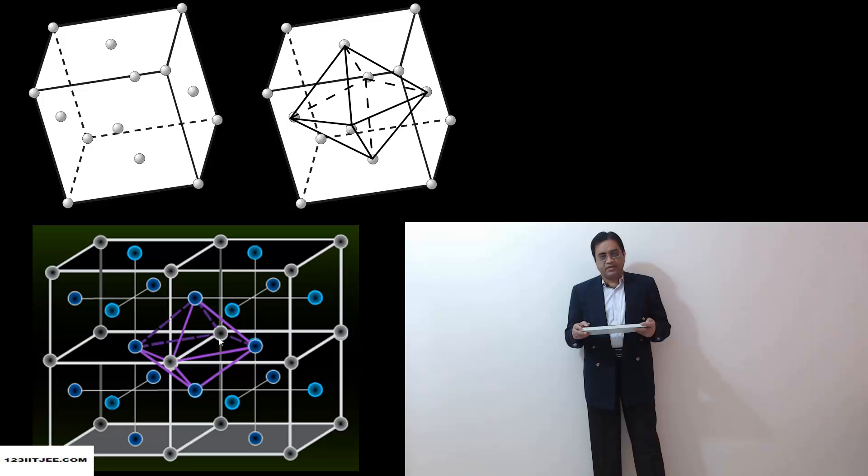All these give us an octahedron whose centroid is here on the edge of a unit cell. So we have an octahedral void at the edge.